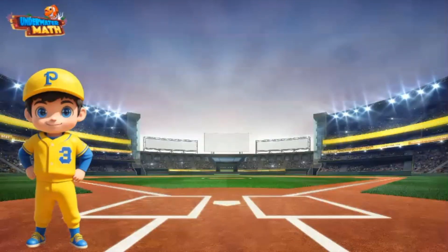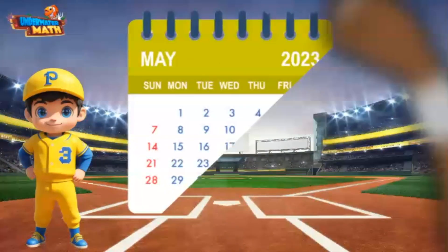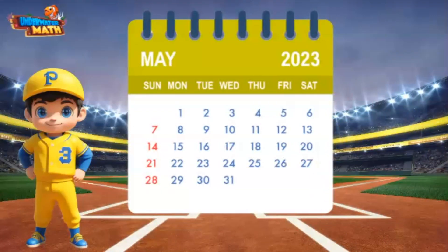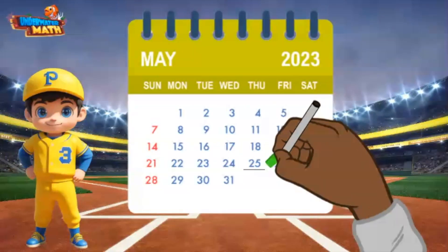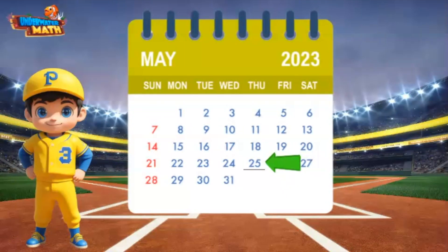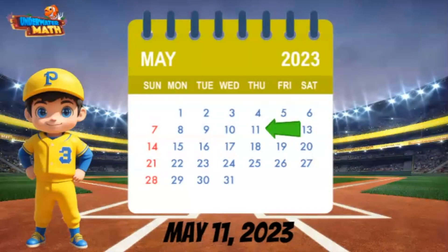Okay, one more calendar problem and then I have to head to a little baseball practice. Next month is May. I know I have a game on May 25th but I also know that I have a game exactly 2 weeks before that. What date is exactly 2 weeks before May 25th? I know that each row on the calendar represents a week, so if I start at May 25th and move directly up 2 rows, that will give me the correct day. I landed on the 11th. May 11th is exactly 2 weeks before May 25th.